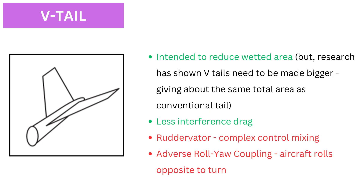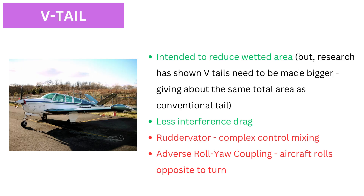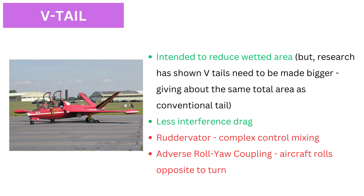V-tail: This type was intended to reduce the wetted area and hence drag of the tail. As the tail surfaces have a dihedral, the horizontal and vertical forces on the aircraft are projections of the force exerted upon the V-surfaces. In reality, extensive research has shown that V-tails need to be made bigger, giving about the same total area as a conventional tail for sufficient stability and control. However, there is still less interference drag on the V-tail. In a V-tail, the rudder and elevator are combined as ruddervators, and so their controls need to be mixed for proper movement.